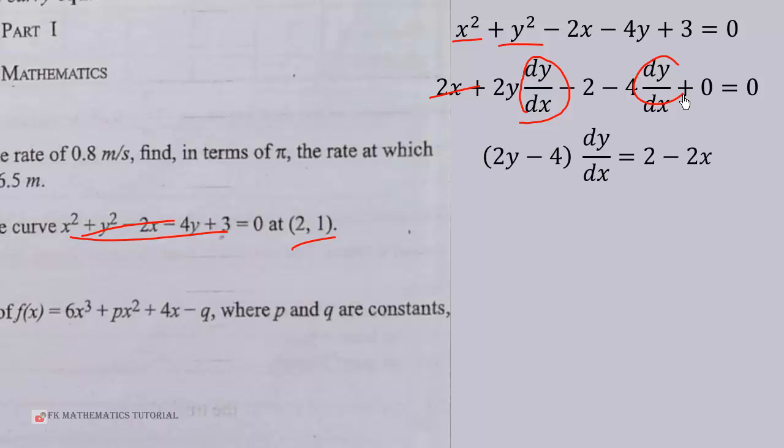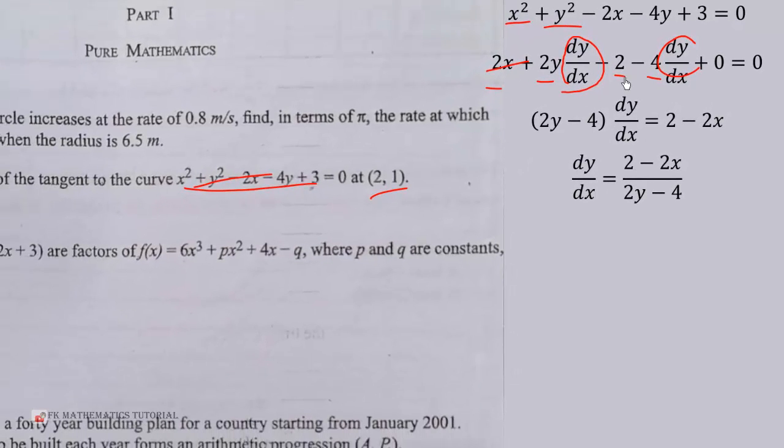So we solve for dy/dx. That is we factor dy/dx out of this and this we get 2y minus 4. Then we send the other one to the other side of the equation to get 2 minus 2x. So dividing through by 2y minus 4 we get this expression for dy/dx. At the given point x equals 2 and y equals 1, so we do the substitution to get dy/dx to be equal to 1. So that is the gradient of the tangent at the point (2,1).